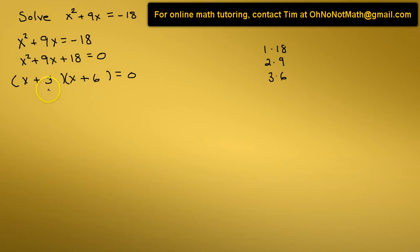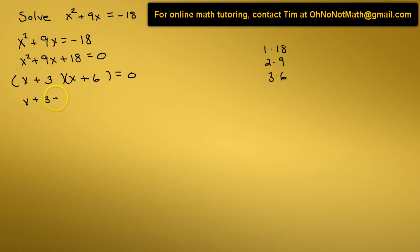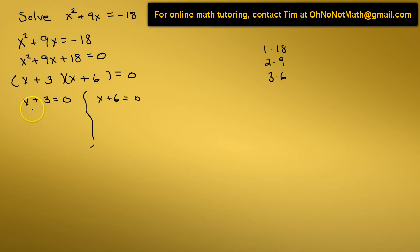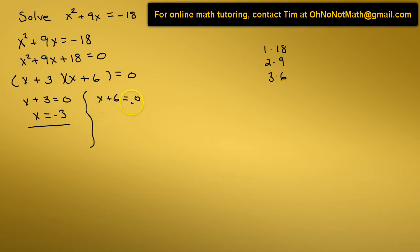Now we've factored the trinomial. To solve, we set each of these factors equal to 0 and solve for x. So we have x plus 3 equal to 0, and x plus 6 equal to 0. Starting with x plus 3 equals 0, we subtract 3 from both sides and get x equals negative 3. That's one solution. For x plus 6 equals 0, we subtract 6 from both sides and get x equals negative 6. That's the second solution.